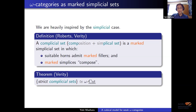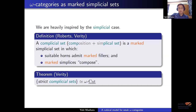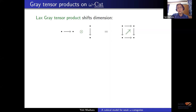A question: if there's this simplicial model, why do we develop another cubical model? Different shapes are good for different things. Our focus for this talk is the Gray tensor product, which also came up in the previous talk. What is this tensor product? It's a tensor product that you can define on omega-cat. There are two versions: lax and pseudo. The lax Gray tensor product shifts dimension in the sense that if you tensor a one cell with a one cell, instead of getting a commutative square, you get a two cell in the middle.